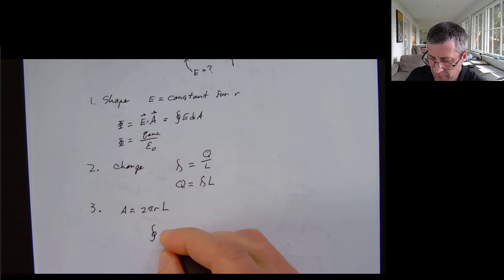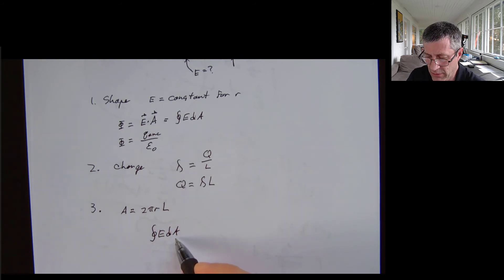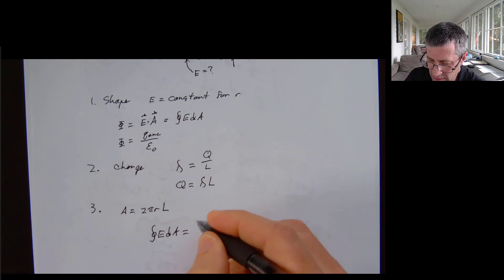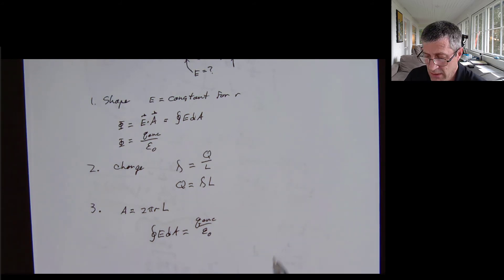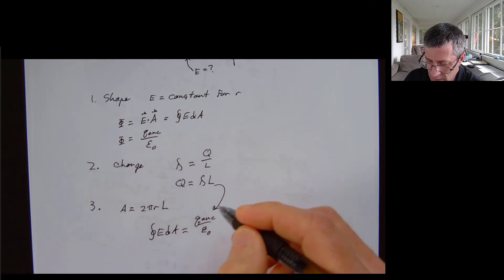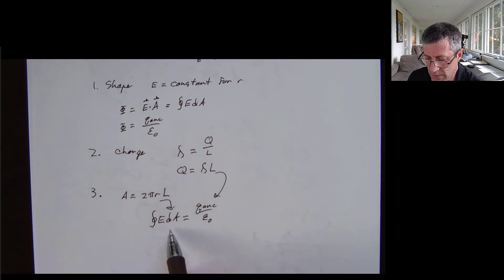So if I add up all that flux coming from my electrical field times the area, that's going to equal the amount of flux that's captured from the Q enclosed over epsilon naught. So there's two ways of describing flux. And now I'm going to plug in these things to make sense out of it.